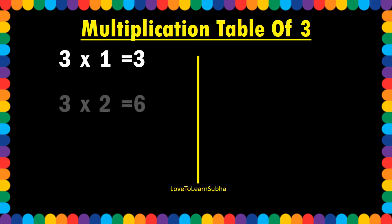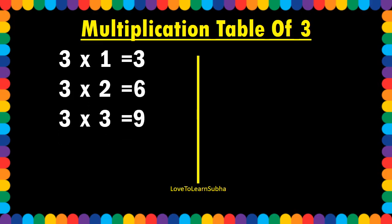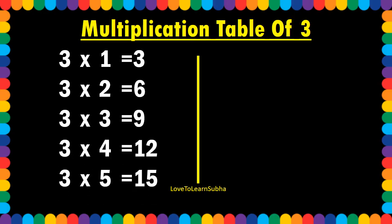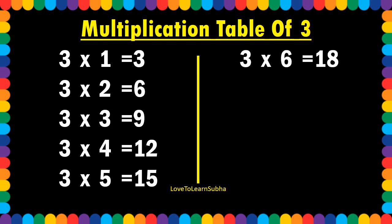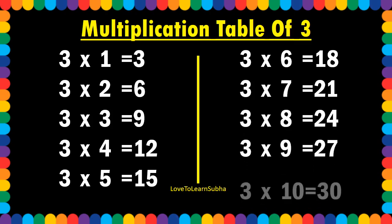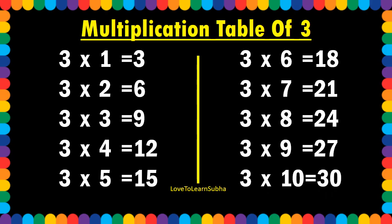Multiplication table of 3. 3 6s are 18, 3 7s are 21, 3 8s are 24, 3 9s are 27, 3 10s are 30.